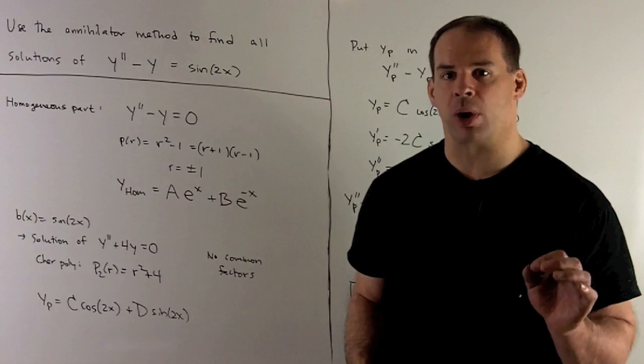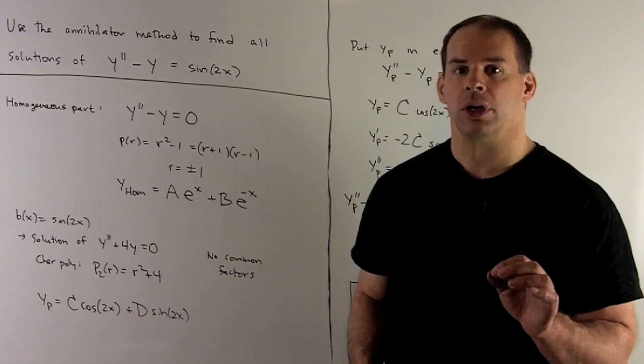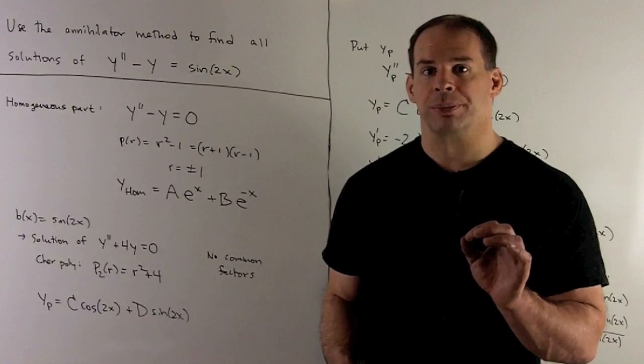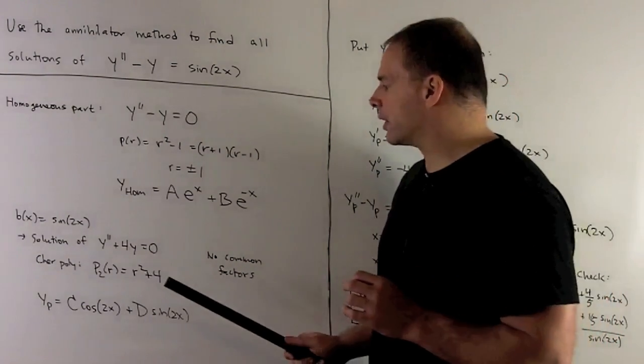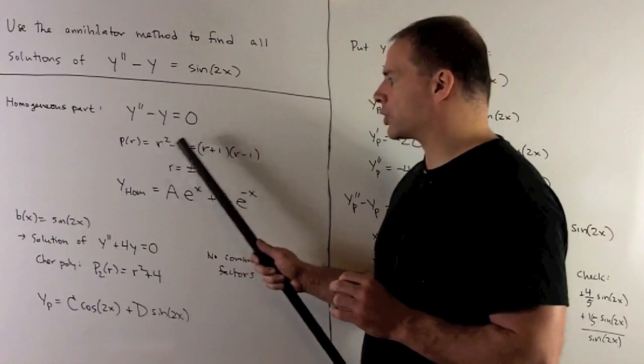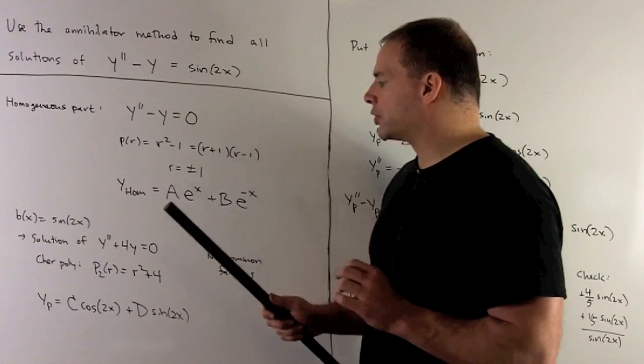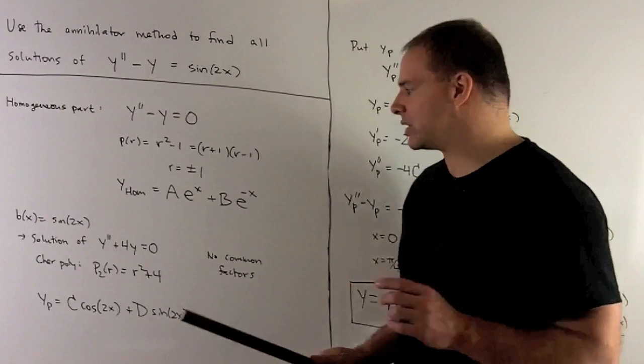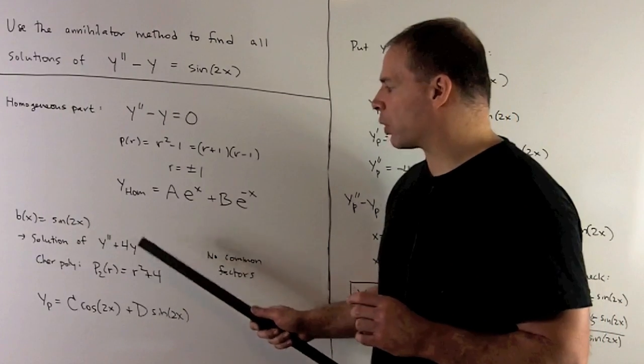Characteristic polynomial there is going to be r squared plus four. For the annihilator method, we check and see if there are any common factors. So, there's no common factors for r squared plus four with r squared minus one. So, our particular solution then is going to live in the solution space for y double prime plus 4y equals zero.